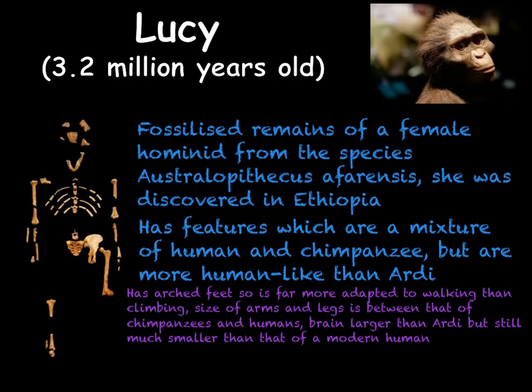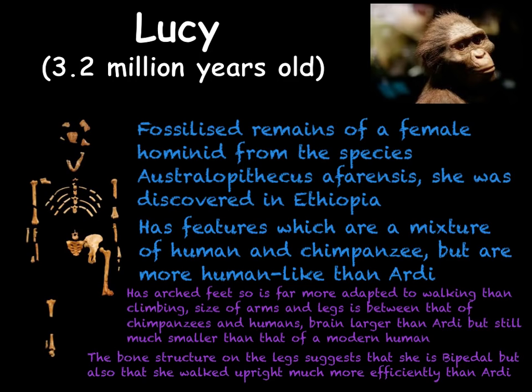As brain size in humans got larger, so did the size of our hips. The width of the hips got larger in order to give birth to offspring with a larger cranial size to support the larger brain. As with Ardy, Lucy's bone structure in her legs suggests she was bipedal; however, it would also be clear that she would have walked upright far more efficiently than Ardy would have been able to.